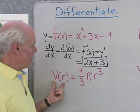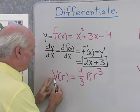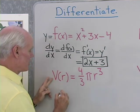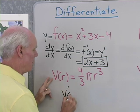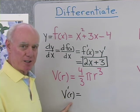V(r) is equal to 4/3 pi r cubed. Well, if I was to... I want to differentiate this with respect to r, so I'll just say V prime of r, meaning I'm differentiating V with respect to r.